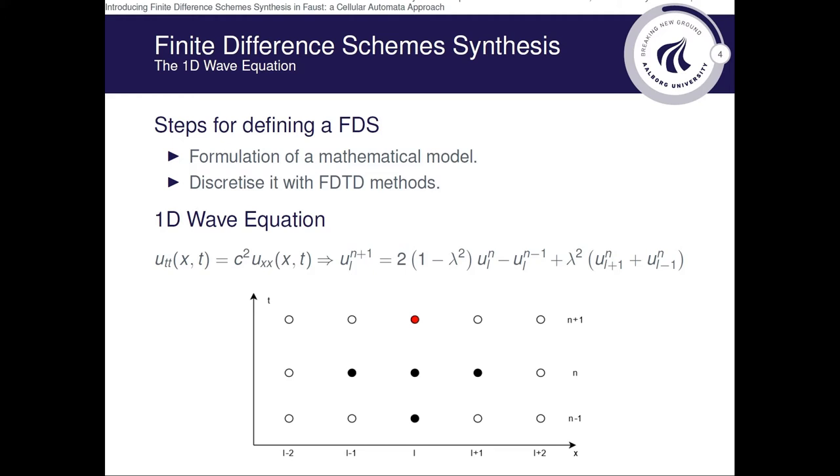As an example, here is a discretized version of the basic 1D wave equation, where l is a space index and n is a time index. This image here shows the space-time dependency of the scheme.